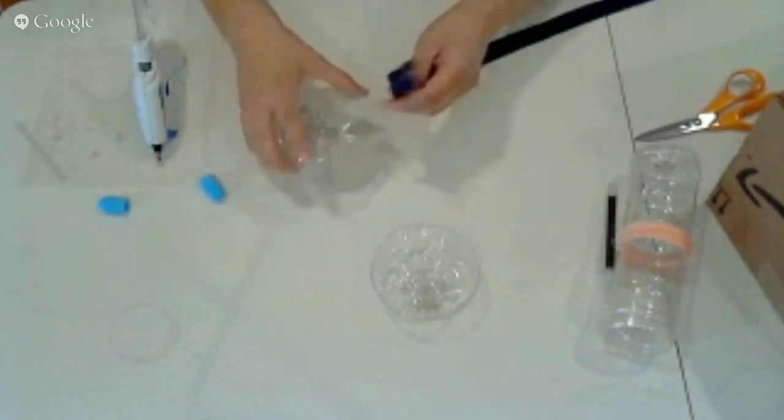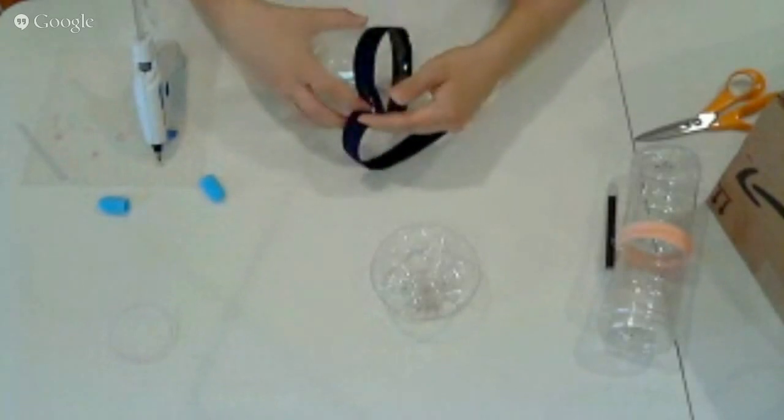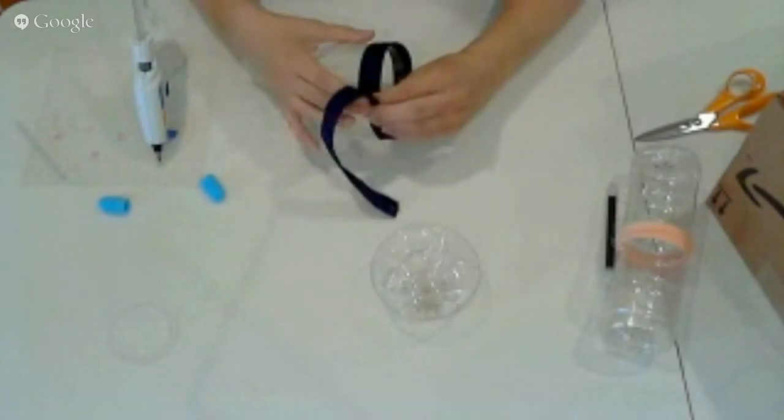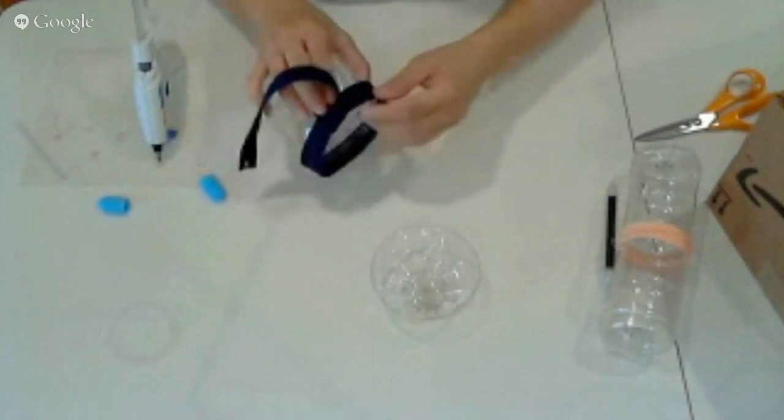Once you get them cut, go ahead and get your zipper. This is what I was starting to say. Depending on the size of your bottle, you might have to adjust your zipper. I'm going to go ahead and cut this zipper. Let's see, I want it to overlap. This is a dark zipper.